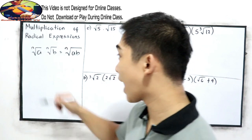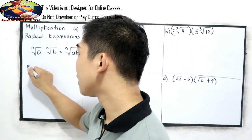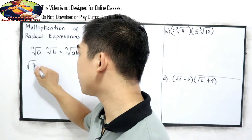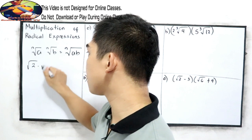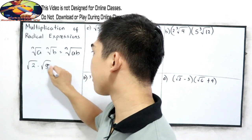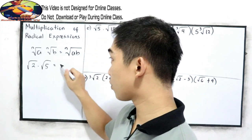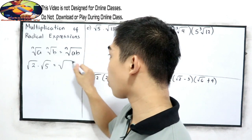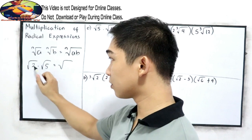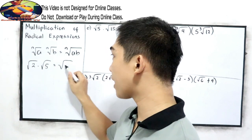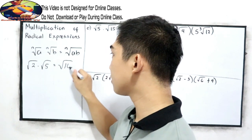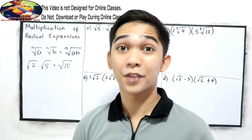So let's say we have square root of 2 times square root of 5. That is equal to square root of 2 times 5, which is square root of 10.